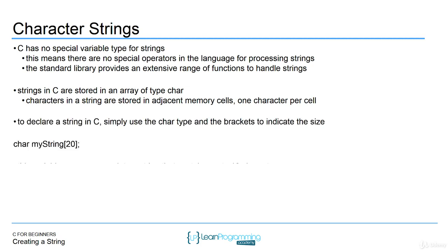How you would actually declare a string in C is you would simply use the char type and then brackets to indicate the size, just like a normal array if you were creating it of a different type. Char, then whatever your variable name is, and then the size of the character array inside square brackets — that's how you declare a string in C. When you do declare the string like this, there's no actual data associated with it; you're just specifying the size.